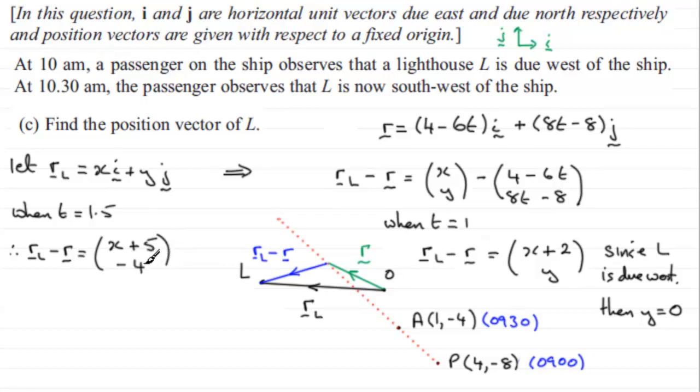Now what we know is that at 10:30 a.m., L is now southwest of the ship. So in other words, if I was to look at this vector here, the blue vector, if it's southwest I would expect to see it looking something like this inclined down here at 45 degrees to the horizontal. So if I just mark in some dotted lines like so, then I would expect, I mean this is the vector that we've got, r_L minus r, but being the southwest, this is inclined at 45 degrees here. This means that we've got an isosceles triangle. This length should equal this length here.